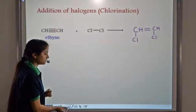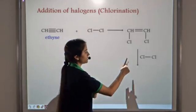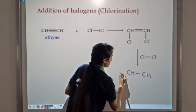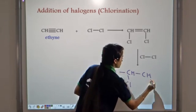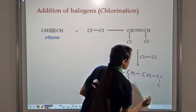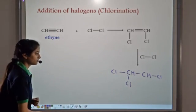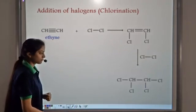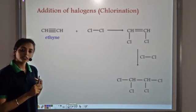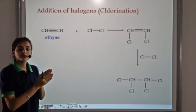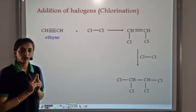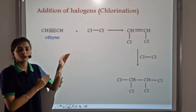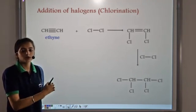When the alkene intermediate is made to react with chlorine again, the double bond breaks into a single bond in the second step. So from an unsaturated alkyne, saturation takes place in two steps: the alkyne first changes into an alkene (triple bond breaks to double bond), and then the alkene changes into an alkane (double bond breaks to single bond).